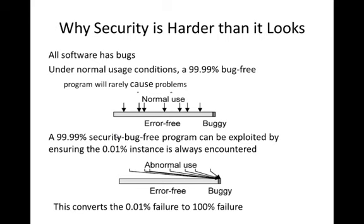Why is security harder than it looks? Because every system has bugs. Normal users don't exploit these bugs, but hackers do. So the chance of failure is 100 percent — there is always a vulnerability to be found.